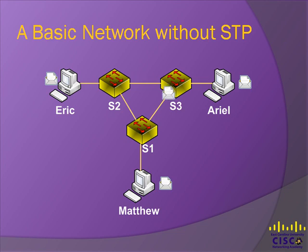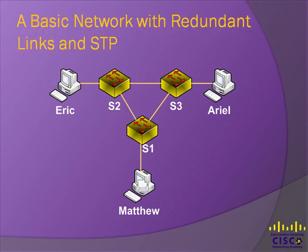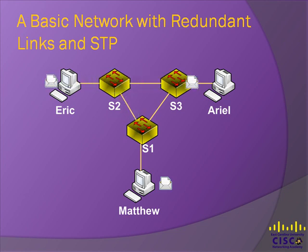Additionally, MAC table instability also occurs in this environment as a result of the looping frames. Now let's observe how the packet is forwarded in the same environment, this time with the implementation of STP. The duplicate frame was blocked since the interface on switch 1 linking to switch 3 is set to a blocking state.